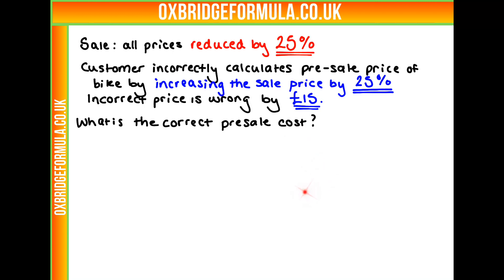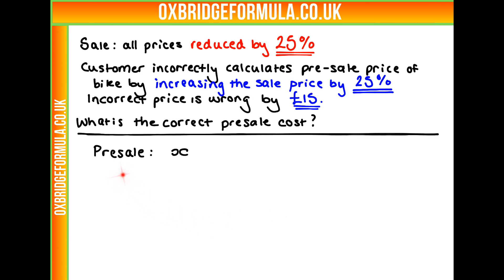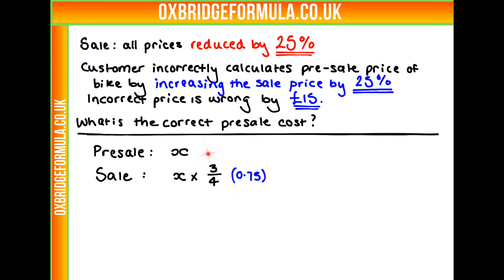A good way to do this would be to use algebra. Let's say the thing we're looking for — our pre-sale price — is X. That's the value we're looking for. What is going to be our sale price? Well, we know it's reduced by 25%, so all we need to do is multiply by 0.75, because we've reduced by 25%, we're going to have 75% left. So our sale price is three-quarters X.